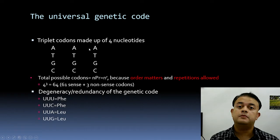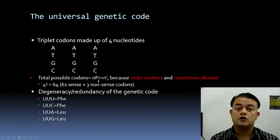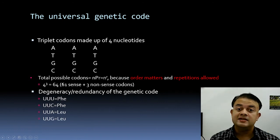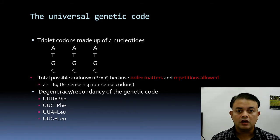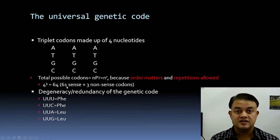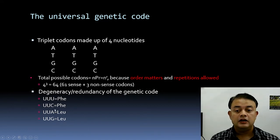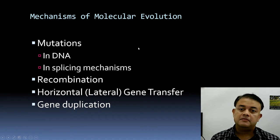Out of 64 total codons, three are nonsense (stop) codons — whenever encountered, transcription stops. The remaining 61 are sense codons. Degeneracy or redundancy of the genetic code means many of these 61 sense codons code for the same amino acid. For example, UUU codes for phenylalanine, as does UUC; leucine is coded by UUA and UUG.